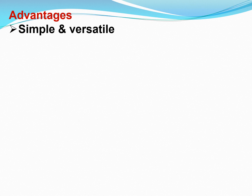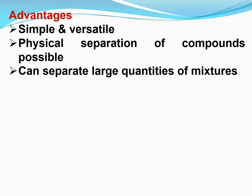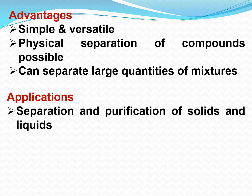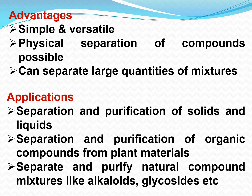Advantages of column chromatography: it is simple and versatile, physical separation of compounds is possible, and you can separate large quantities of mixtures — one liter, two liters, ten liters. Applications include separation and purification of solids and liquids, separation and purification of organic compounds from plant materials and plant extracts, and separation and purification of natural compound mixtures like alkaloids and glycosides.